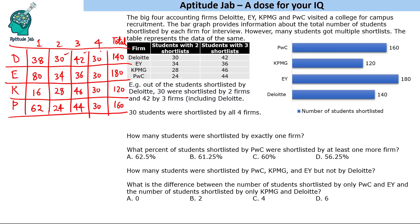Let's look at the questions before making the Venn diagram. The first question: how many students were shortlisted by exactly one firm? That will be the summation of all one-shortlist values. So 38 plus 80 plus 16 plus 62 — that gives 196. So 196 students were shortlisted by exactly one firm.